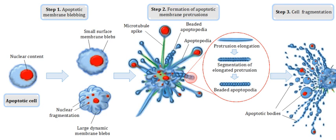Blebbing also has important functions in other cellular processes, including cell locomotion, cell division, and physical or chemical stresses. Blebs have been seen in cultured cells in certain stages of the cell cycle. These blebs are used for cell locomotion in embryogenesis.